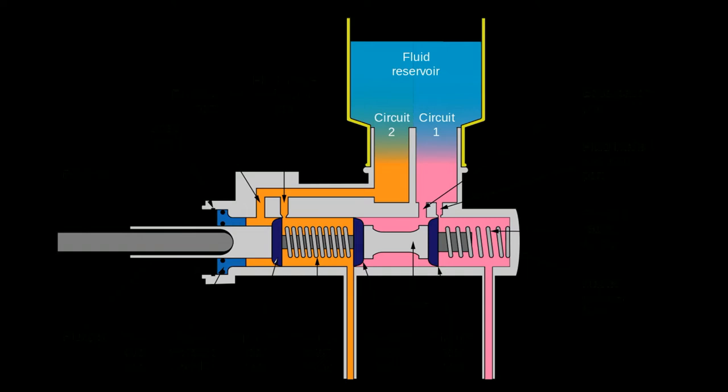A master cylinder in an automobile braking system is a hydraulic device in which a cylinder and one or two pistons are arranged such that the mechanical force applied by the driver — either by brake pedal or brake lever — is converted into hydraulic pressure, which is then transferred to the brake caliper for braking. In a hydraulic braking system, the master cylinder provides the required amount of pressure to the final braking components after multiplication of the mechanical force applied by the driver.